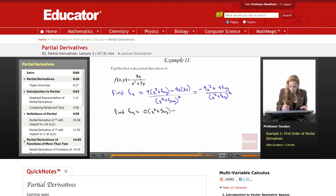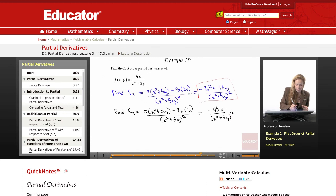And then we'll have minus the numerator times the derivative of the bottom, which is going to be 5, all over the denominator squared, and that's just going to give us negative 45x over x squared plus 5y quantity squared. Those are our partial derivatives that the question asks us for.